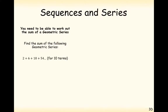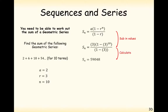You might be asked to prove this in an exam. Find the sum of the following geometric series: 2 plus 6 plus 18 plus 54, for 10 terms. So in this case a is 2, r is 3, n is 10, and it's just a case of applying the formula. We're going to get a negative on the top and a negative on the bottom, but they cancel out through the division, and the answer is 59,048.